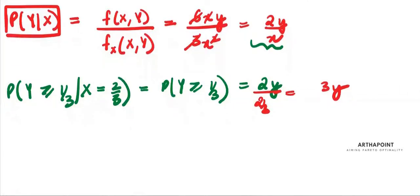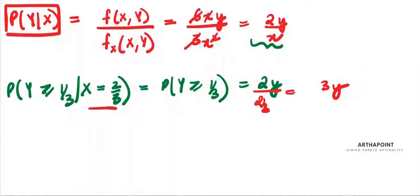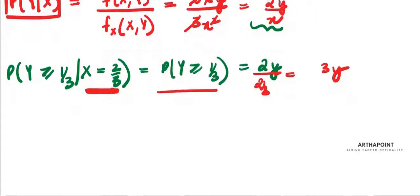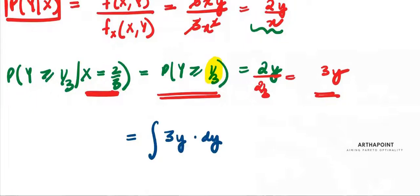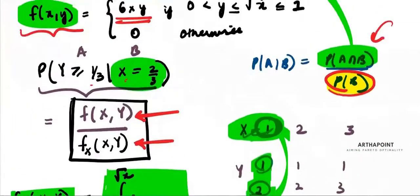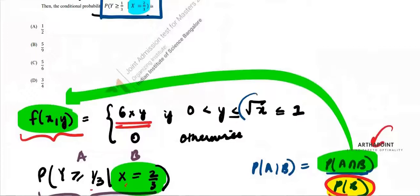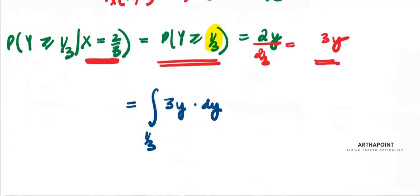I've already substituted x = 2/3 and I'm left with finding the probability that y ≥ 1/3 from the function 3y. To find this probability, I integrate the conditional PDF from 1/3 up to the upper limit of y, which is root x. So y ranges between 0 and root x, but the lower limit is given as 1/3, so I integrate from 1/3 to root x.